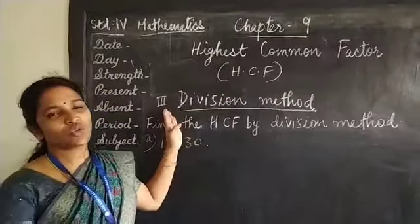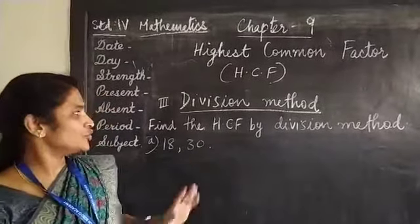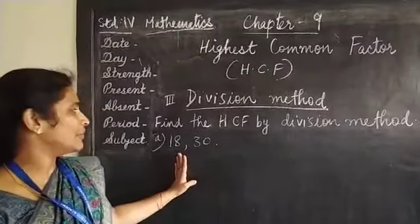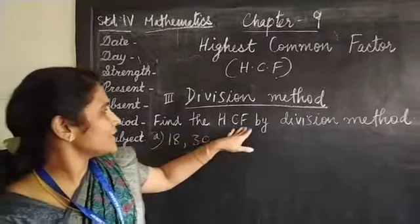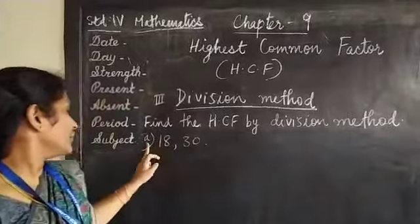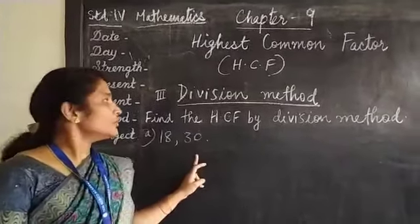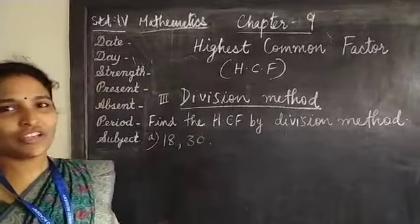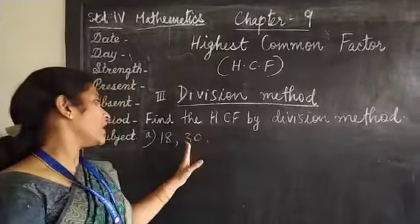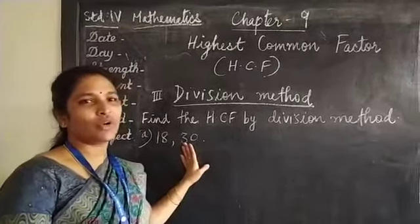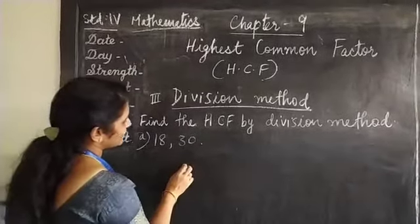How to find the highest common factor by division method? I will do two questions and you will be able to understand by doing these questions. Now find the HCF by division method. First question is 18 and 30. When you find the HCF by division method, first what we are going to do, we are going to divide the greater number by the smaller number. Let's do that first.